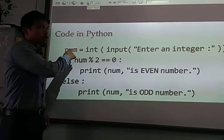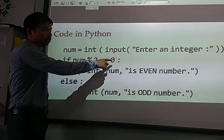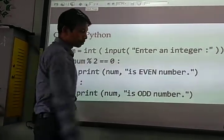Suppose this is 2 or this is 4. So 4 divided by 2, it will be 0. Then this num, so print 4 is even number.